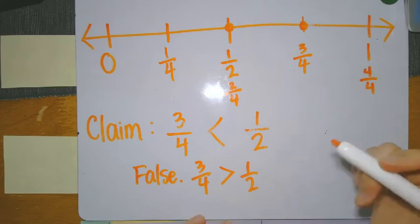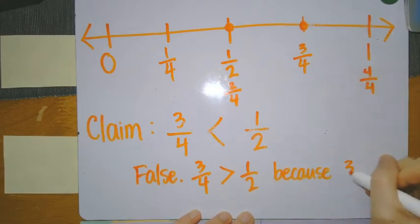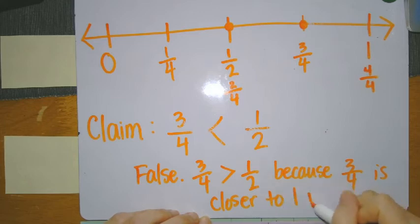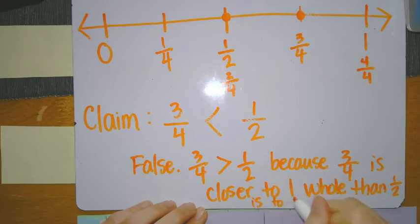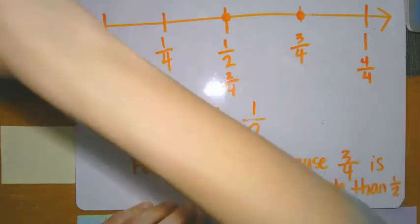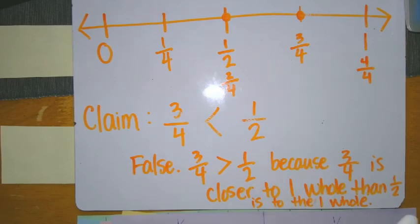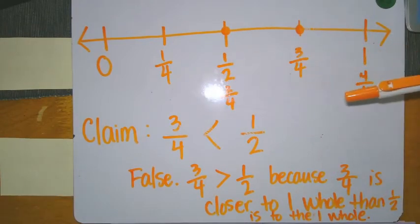I could give a complete sentence: False. Three fourths is greater than one half. Because, looking at my number line, three fourths is closer to one whole than one half. There are lots of different ways for you to explain your evidence. Ultimately, being able to create a number line, write down your fractions, plot your points, and prove your claim — a lot of different things.